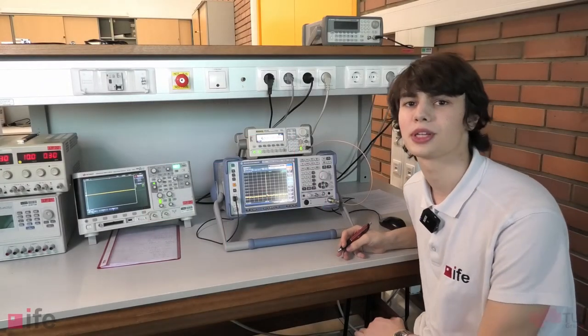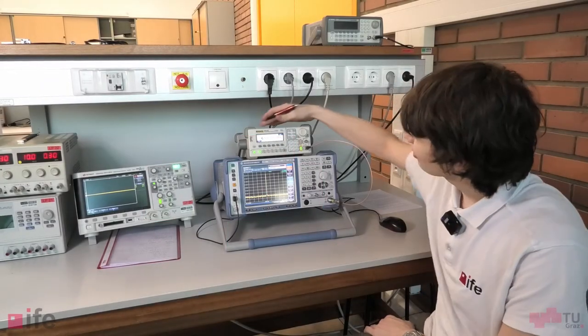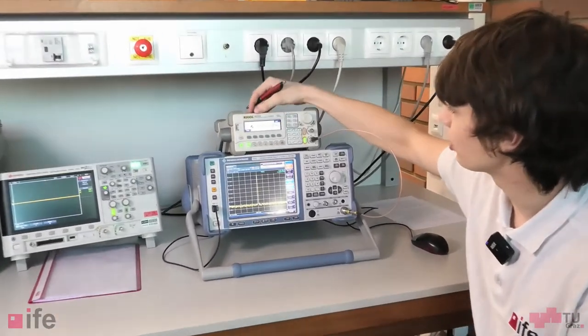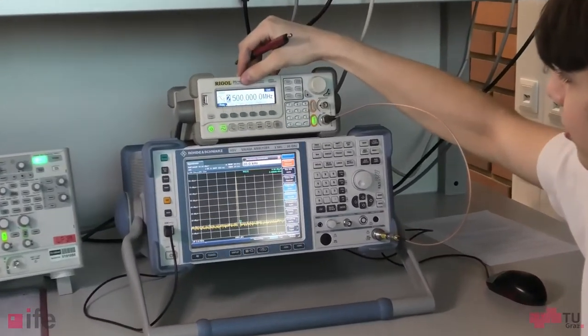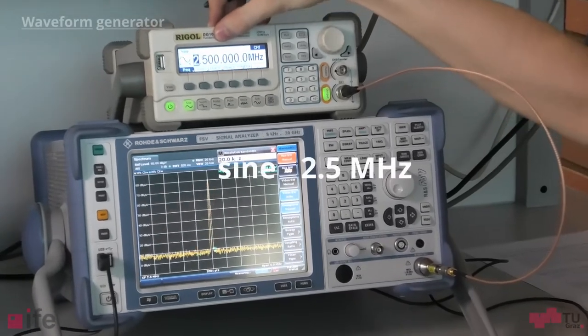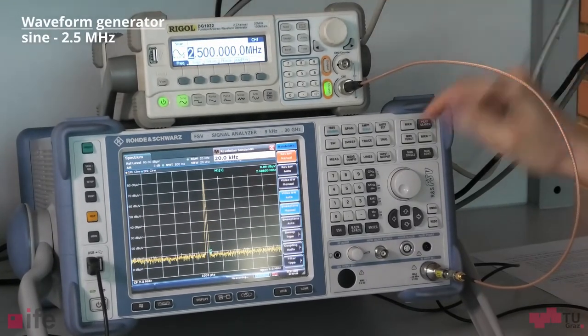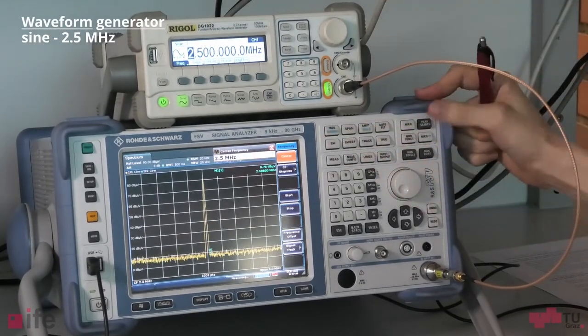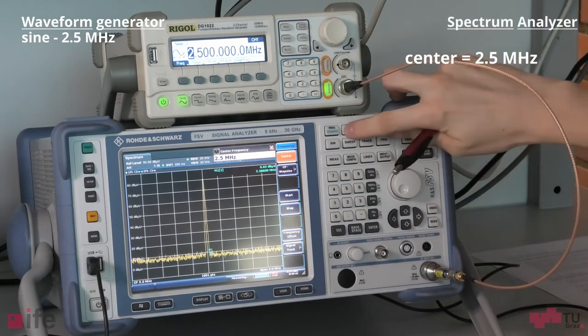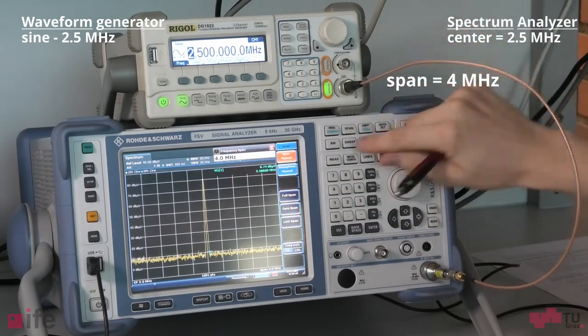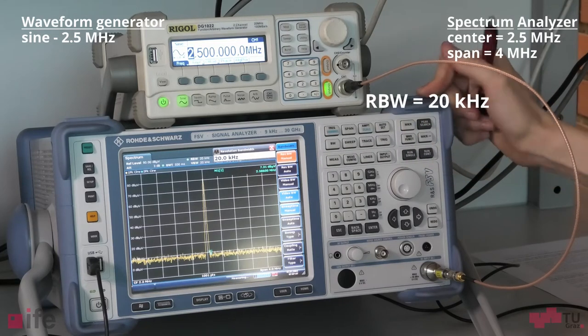Hi, welcome back to our spread spectrum test setup. I have once again configured my arbitrary waveform generator to output a fixed frequency this time at two and a half megahertz, and I have set the spectrum analyzer to the same center frequency with a span of four megahertz and a resolution bandwidth of 20 kilohertz.